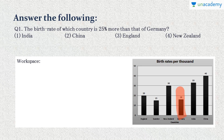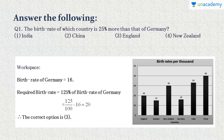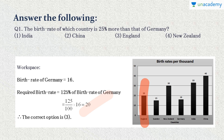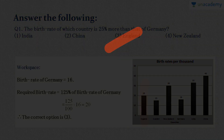Question 1: The birth rate of which country is 25% more than that of Germany? Germany has 16 birth rates per thousand. Taking 125% of 16 gives us 20, which corresponds to England. So England is the country whose birth rate is 25% more than Germany's.